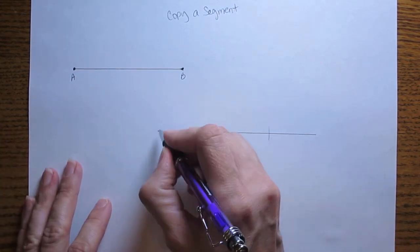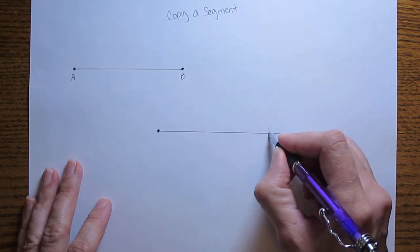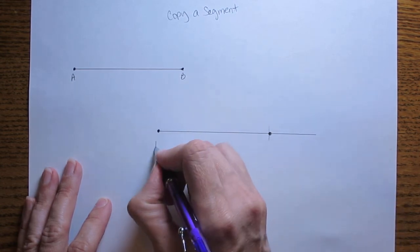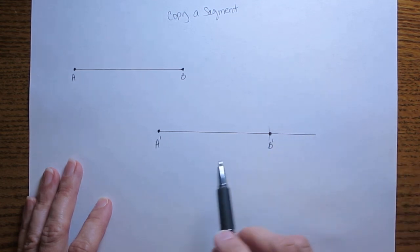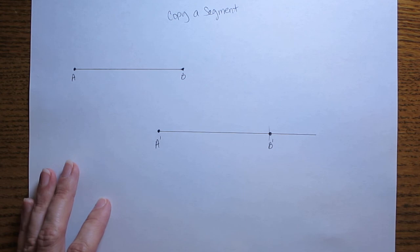Now what you can do is mark the endpoints, and we mark those with an A' and a B'. Those prime marks help us to remember that that was a copied segment and not the original.